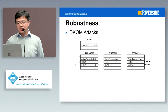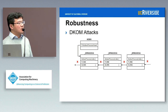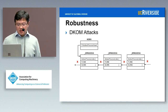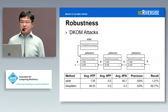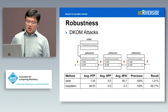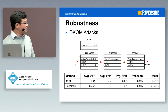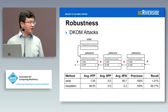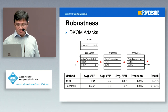We also conducted DKOM attacks. We set the forward link to null, hiding all E-process objects except the first one. This attack is very effective against PS list in Volatility — recall dropped to one percent, because only the first object is still visible to that tool. In comparison, DeepMem works very well: it achieves 100% precision and 99.77% recall, surviving this attack with no problem.